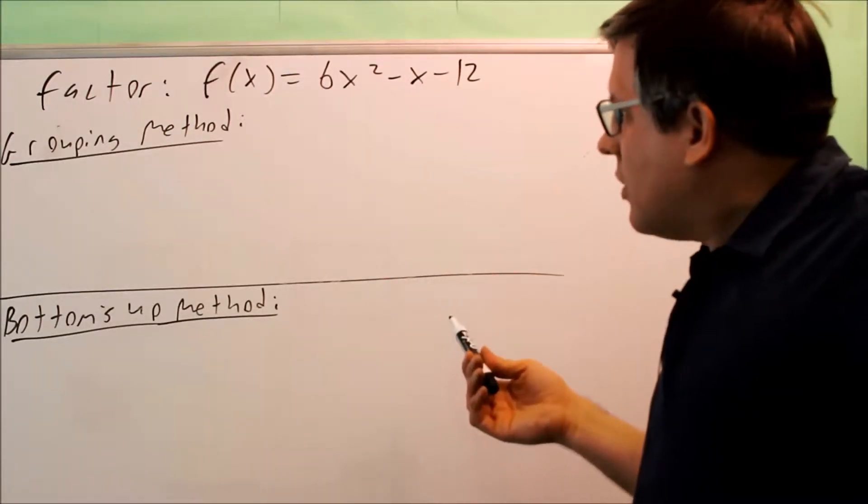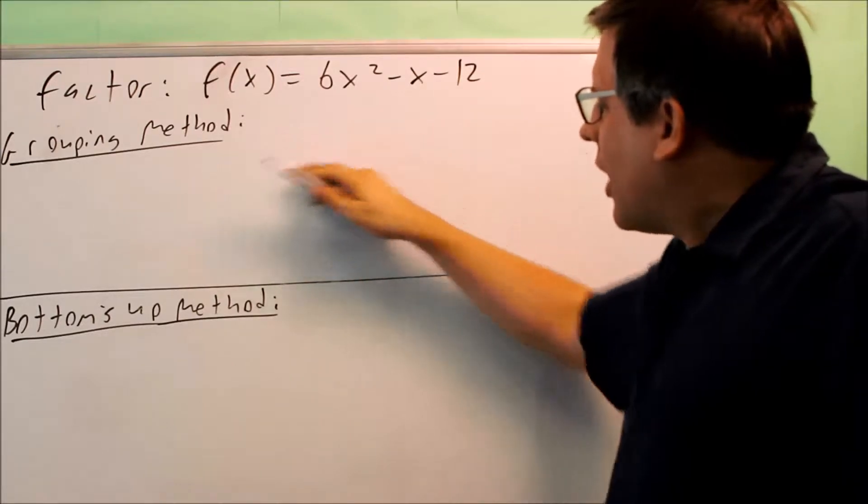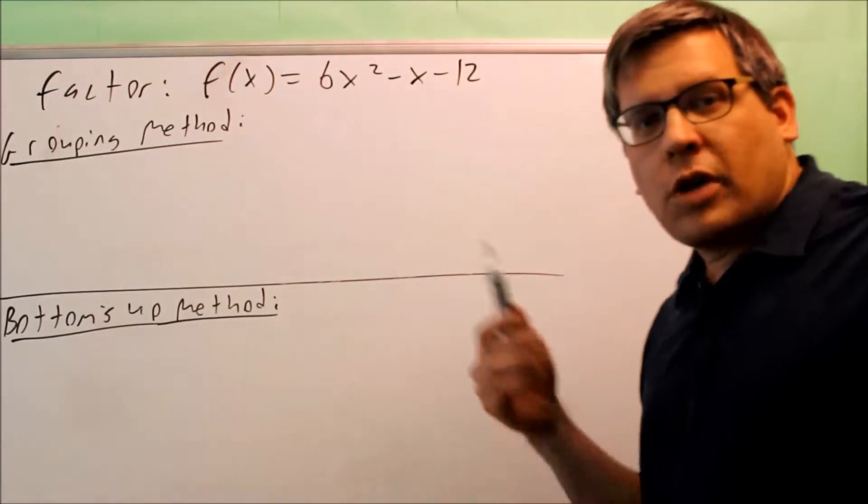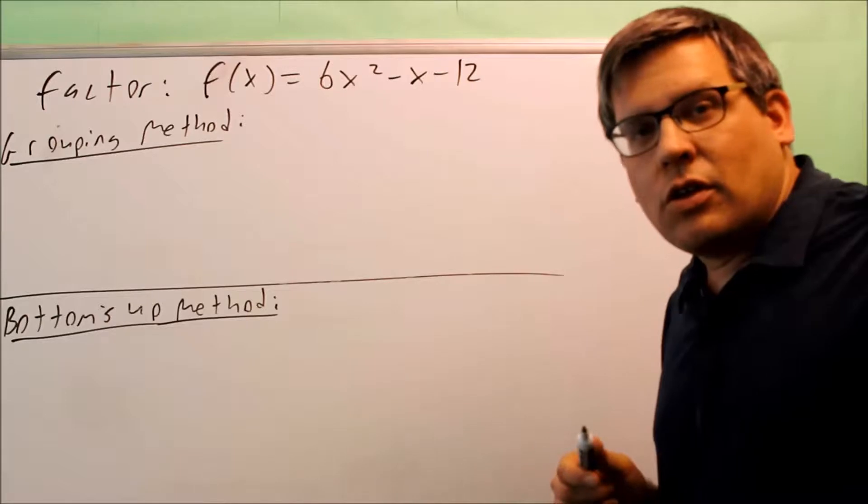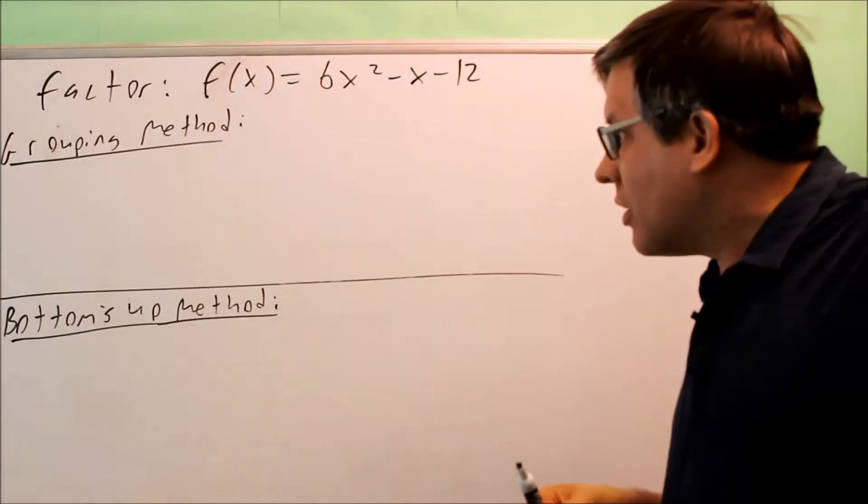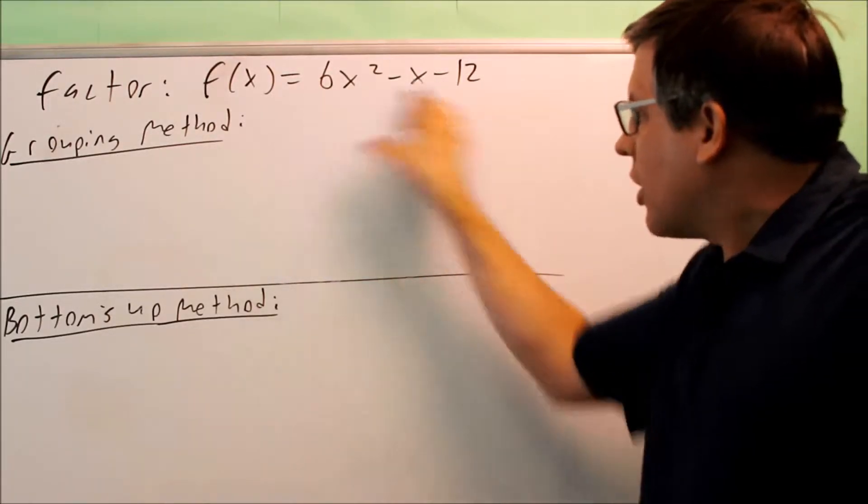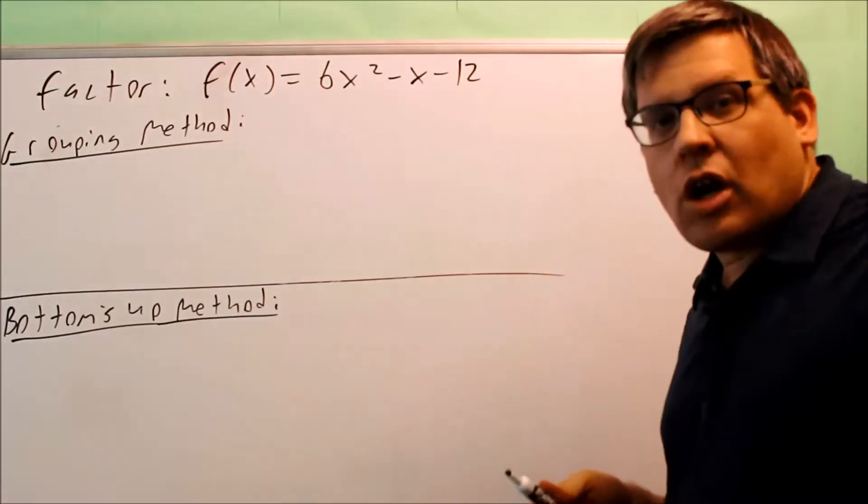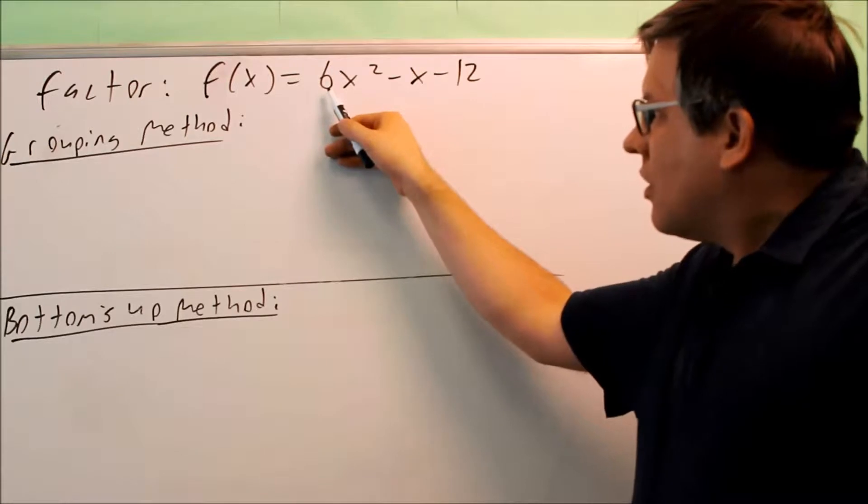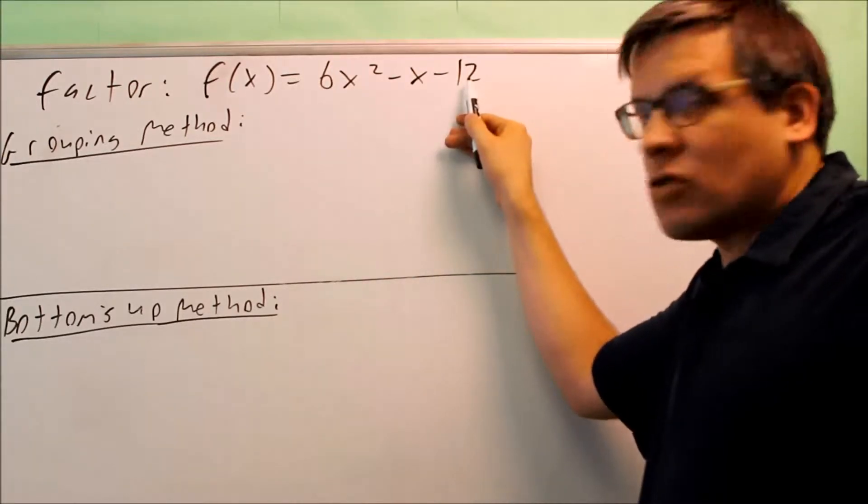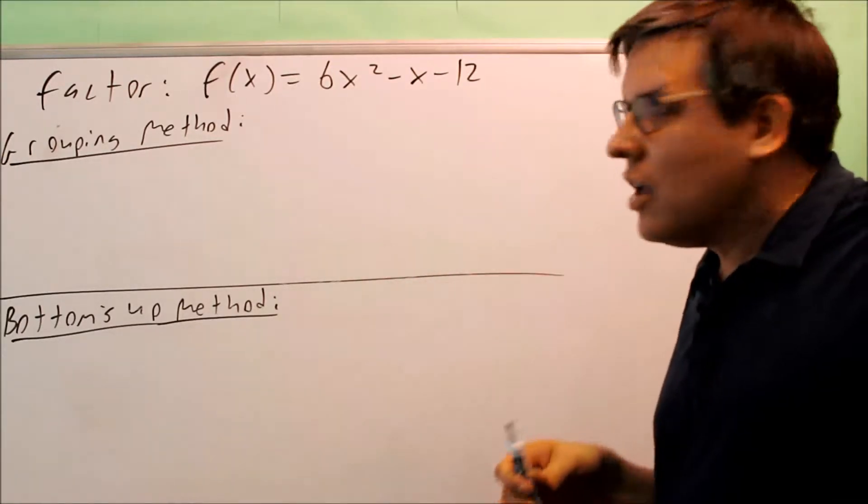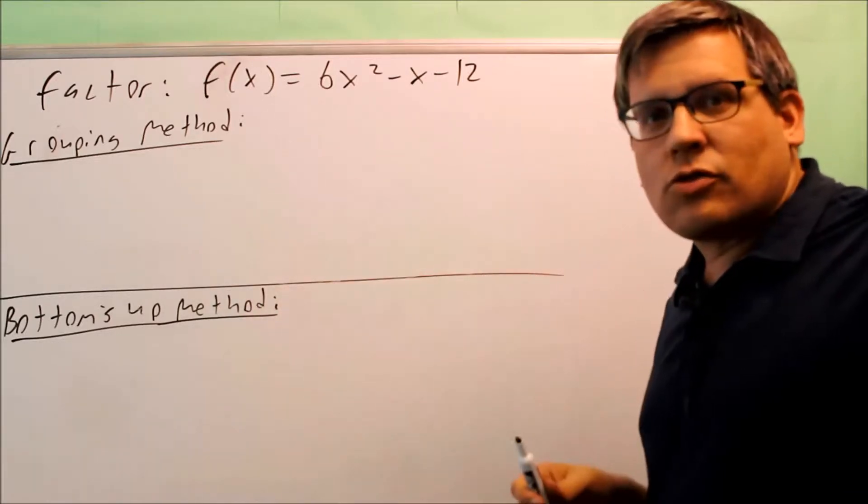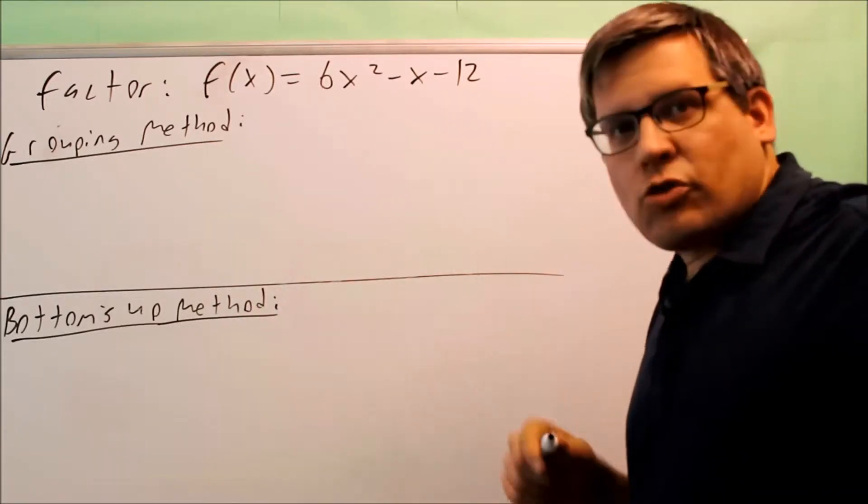So because of that, that means that this type of one we can factor by using a couple different methods. Now one method is going to be the trial and error method. I'm not really going to show that one because it's not really a method, you're just trying different numbers and multiplying and seeing if it works. That method could take a longer time, especially since there's a lot of factors of 6 and there's more factors of 12. So instead of doing that, I'm going to focus on these two methods.